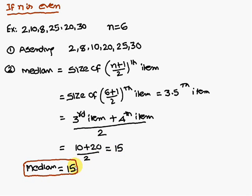15 is the median. So 15 is the median of this observation. So median may not be in the given data. Therefore, 15 is the median of the observation.